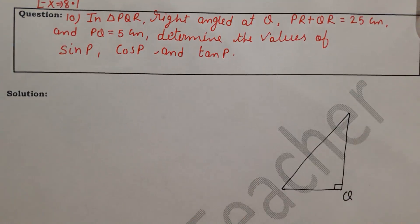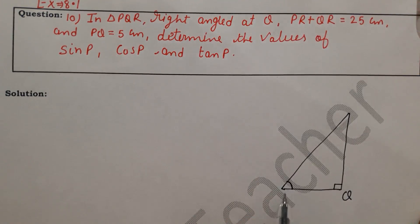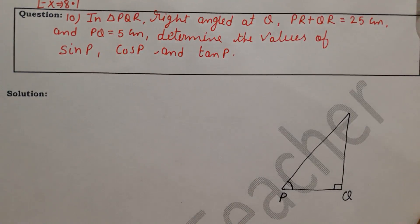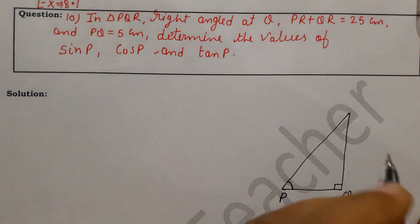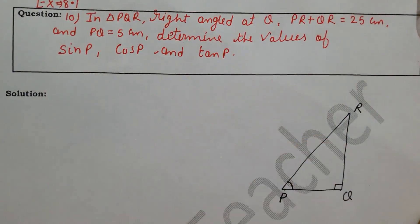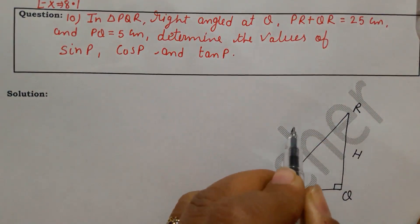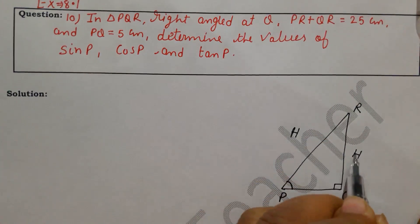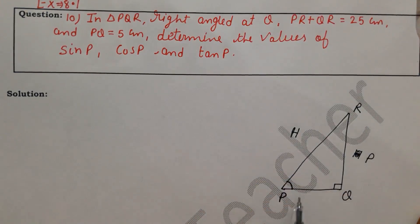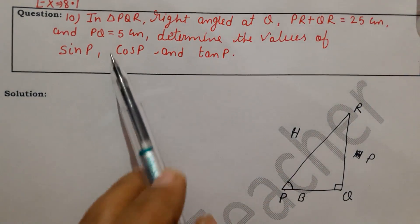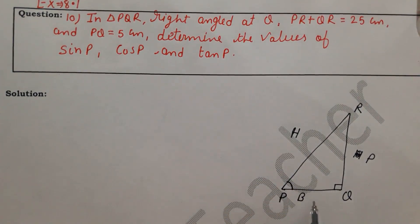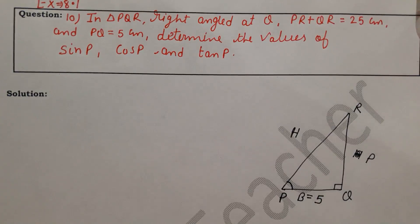Now we have to find the value of sin P, cos P, and tan P, so we identify which side is the angle on — base and perpendicular. This is our complete triangle R. We have the hypotenuse, perpendicular, and base. PQ is 5, so base is 5.